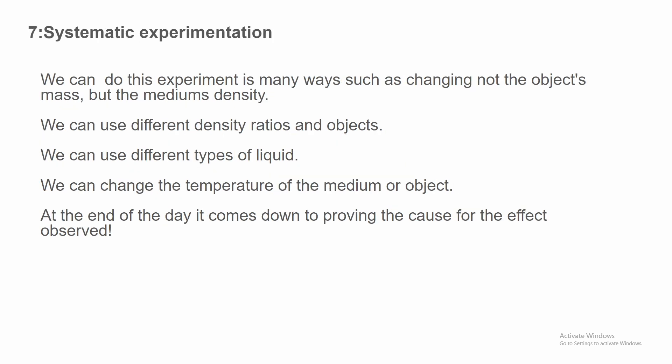Then we can move on to systematic experimentation. We can do this experiment in many different ways, such as changing not the object's mass but the medium's density. We can use different density ratios and objects. We can use different types of liquids. We can change the temperature of the medium or object. At the end of the day, it comes down to proving the cause for the effect observed. Yes, I said it. Prove. You either prove it caused it or you disprove it caused it. You either prove your hypothesis or you disprove your hypothesis, which would either prove or validate the null. You can't have it both ways.